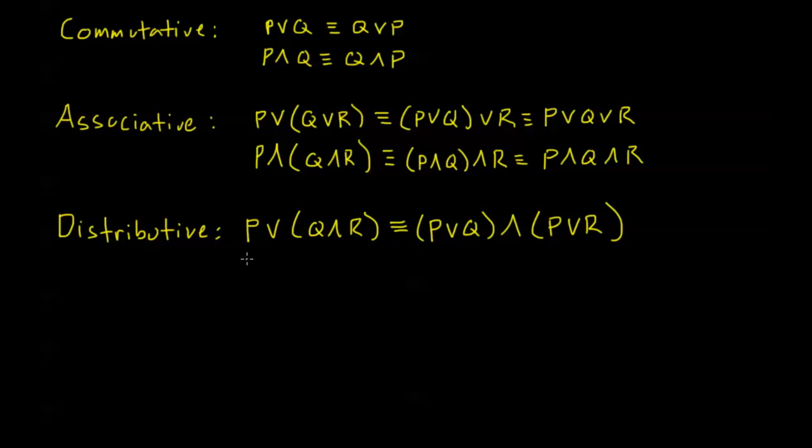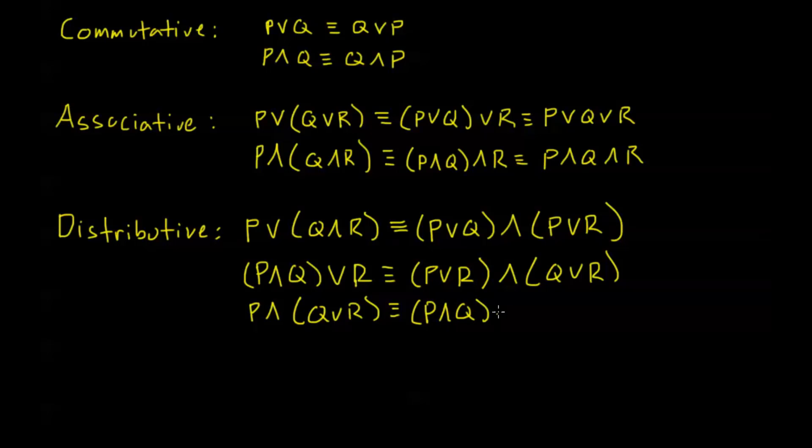Now there's nothing special about this order of or and and. We have three other distributive laws. This is a left-hand side, but I also have, let's say I have P and Q in the parentheses or R on the right. I can still distribute from the right-hand side. This is the same as P or R and Q or R. I'm distributing what's on the outside into the parentheses in that way. And then I also have, of course, I can switch the roles of and and or here. If I have P and Q or R, that's going to be equivalent to P and Q or P and R.